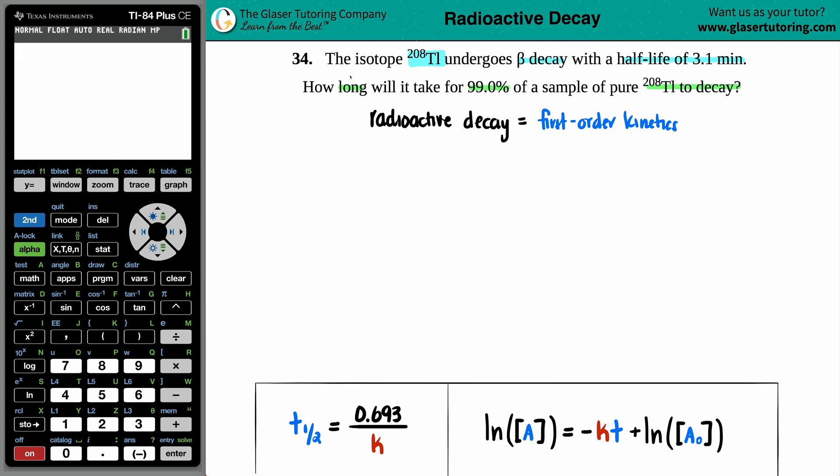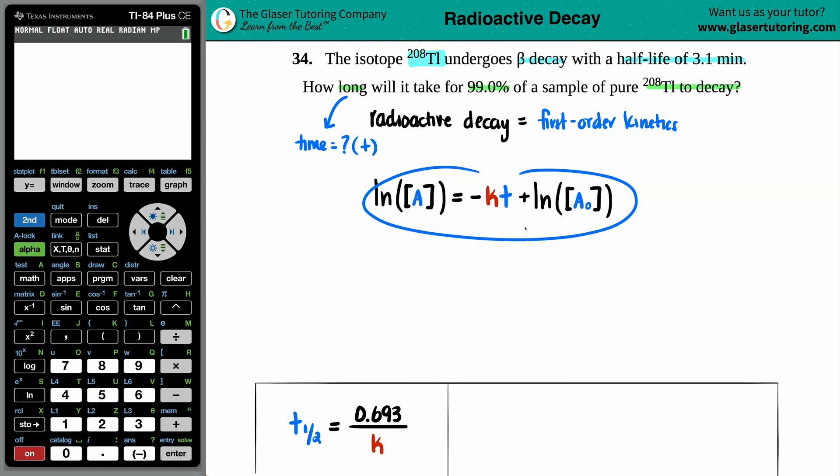Now, the question is asking how long will it take? If they're asking for how long will something take, they're asking for a time value. So that means I don't know what T is. There's two formulas for first-order kinetics. There's one with the T half and then just a regular T. Which time are they looking for? Well, specifically, if you have a T half, that's the half-life. They already gave us that information. They said the half-life was 3.1 minutes. So we're looking for a general time. If we're looking for that just lowercase t, I know that I have to use this formula.